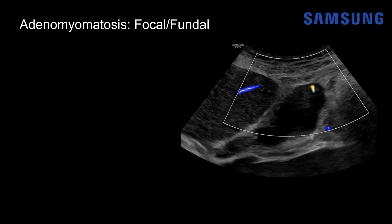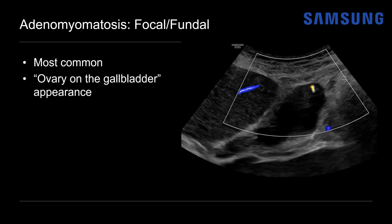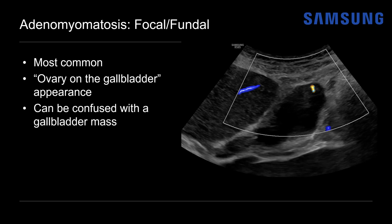The focal fundal type is the most common type of adenomyomatosis. You can see here there's a mass-like heterogeneously hypoechoic focus at the fundus, but we do see color comet tail artifact which is reassuring for the diagnosis. This form often has an 'ovary on the gallbladder' configuration — the area of fundal wall thickening mimics an ovary dropped onto the gallbladder fundus, and it can almost appear extrinsic with the Rokitansky-Aschoff cystic spaces mimicking ovarian cysts. However, if this morphology is not recognized it can be confused with a gallbladder mass, especially if there's not robust comet tail artifact.